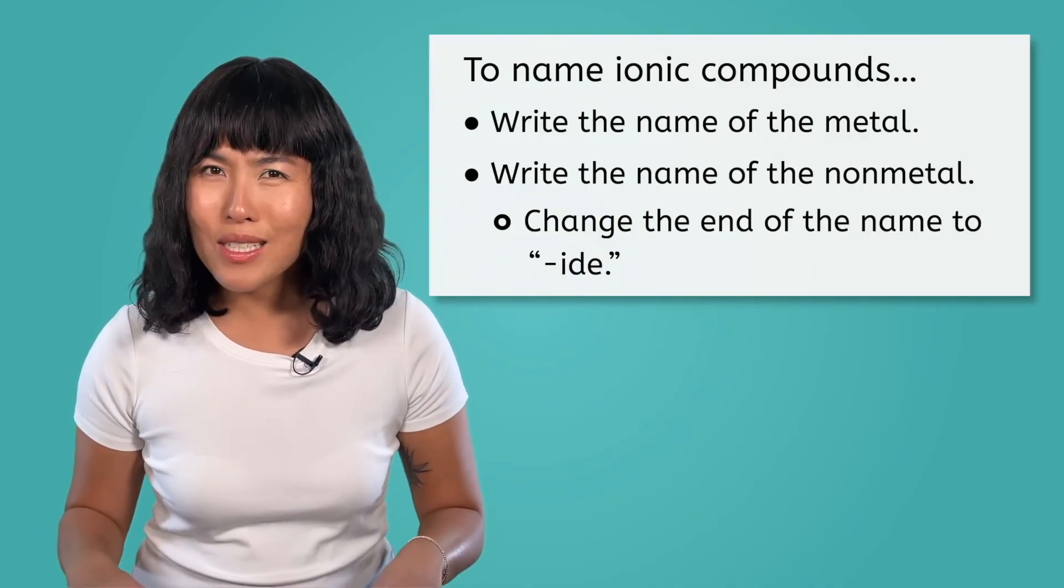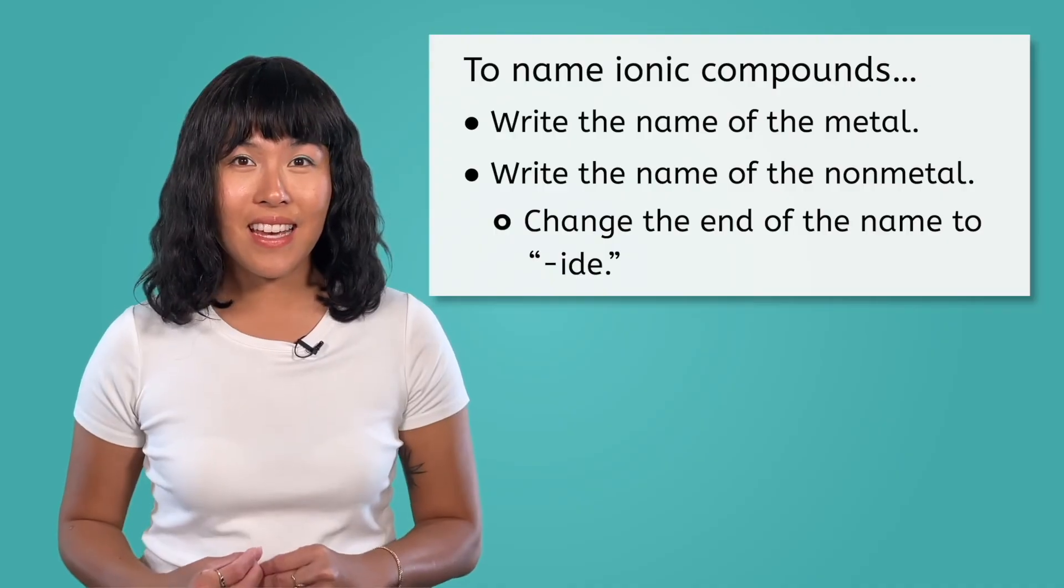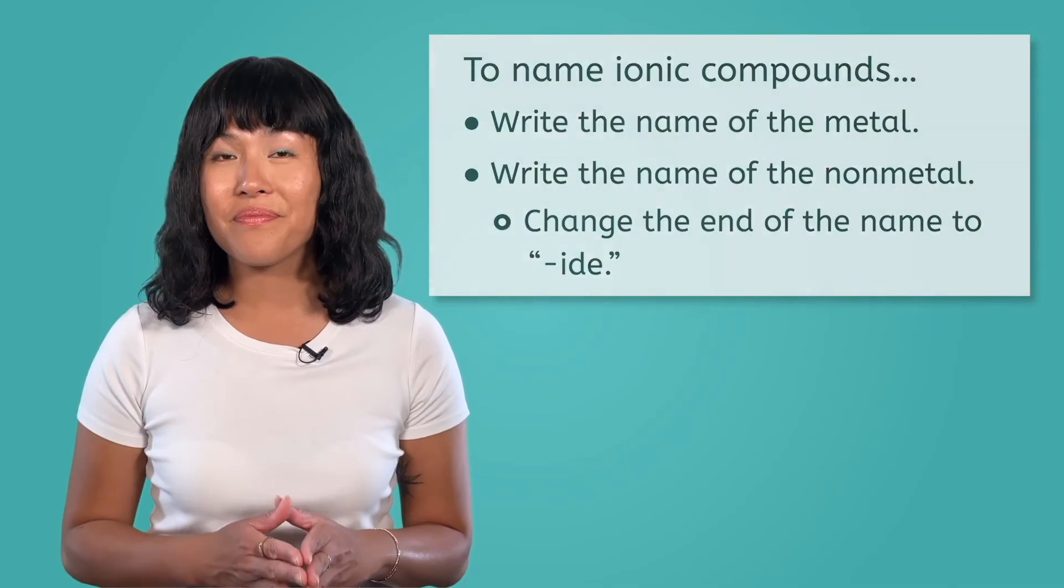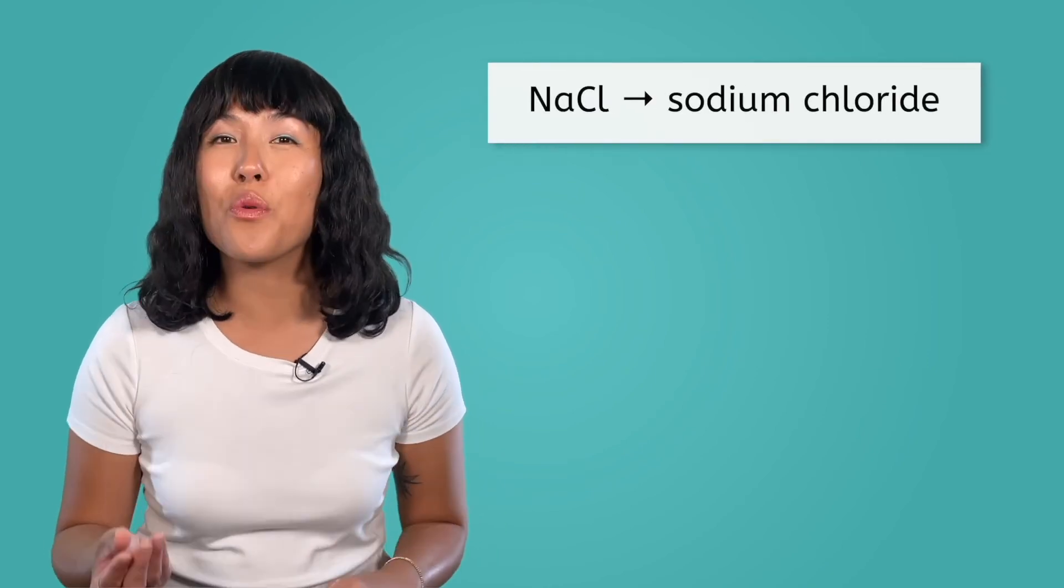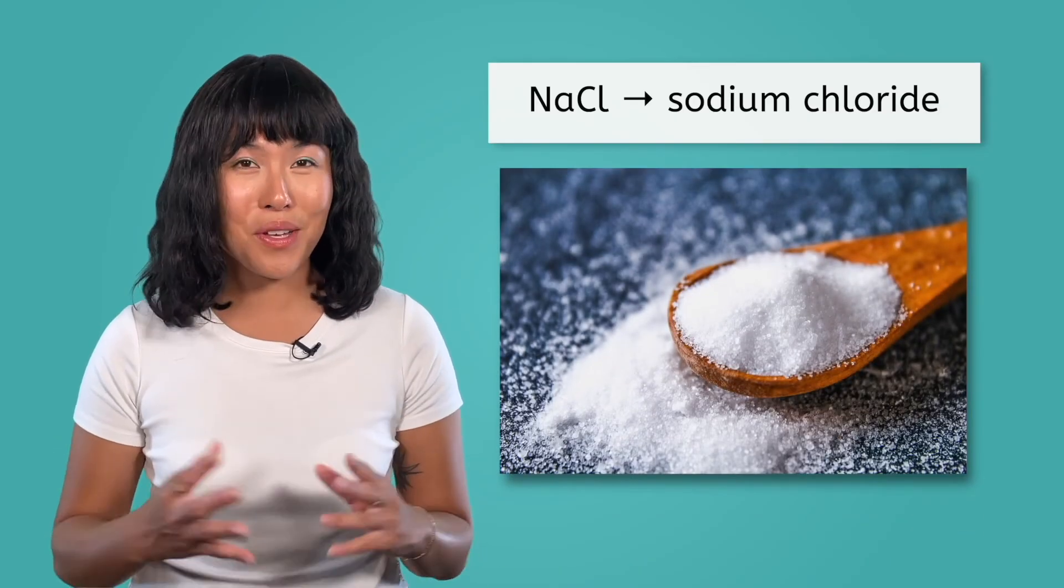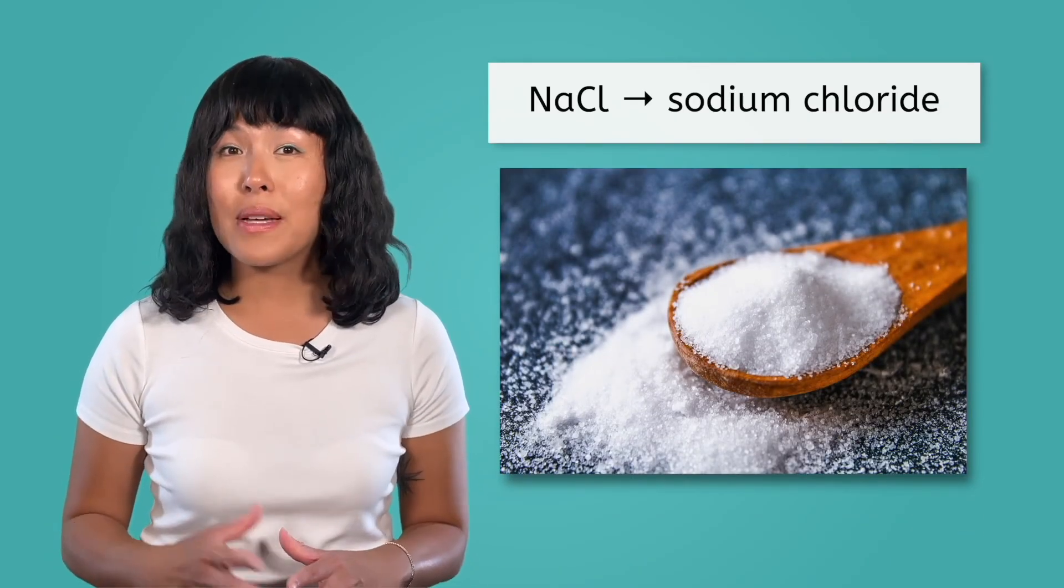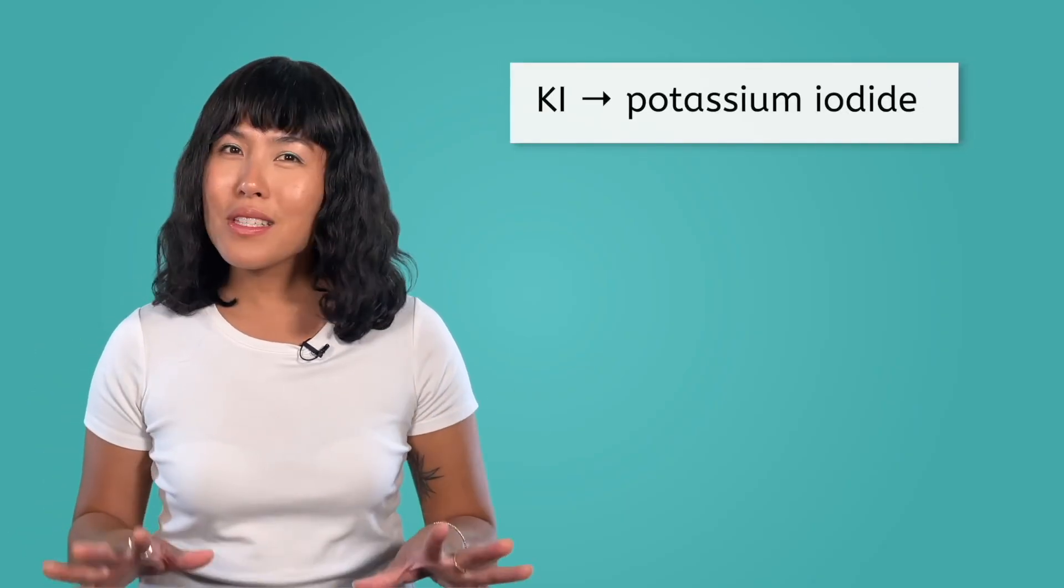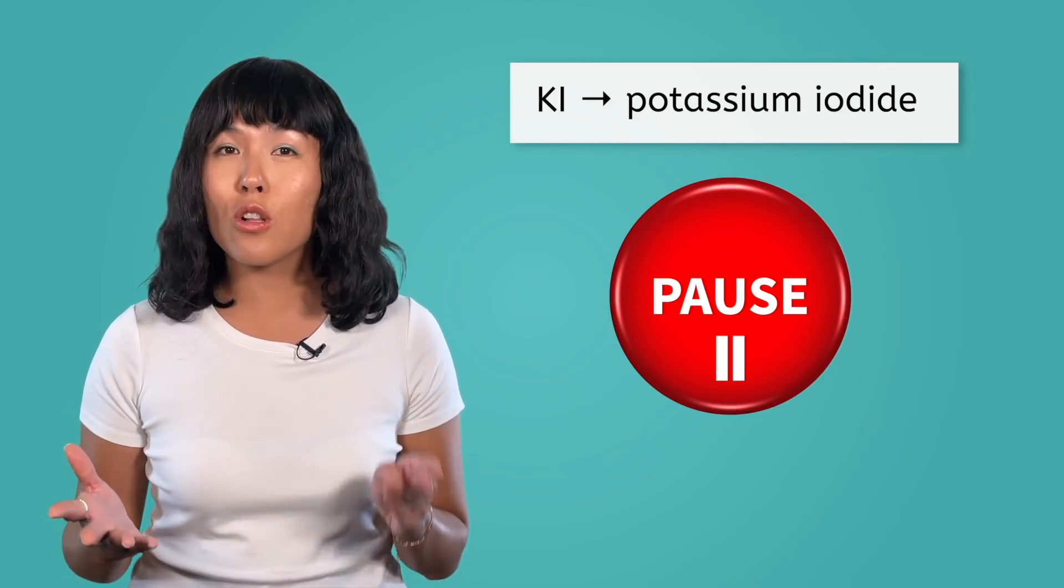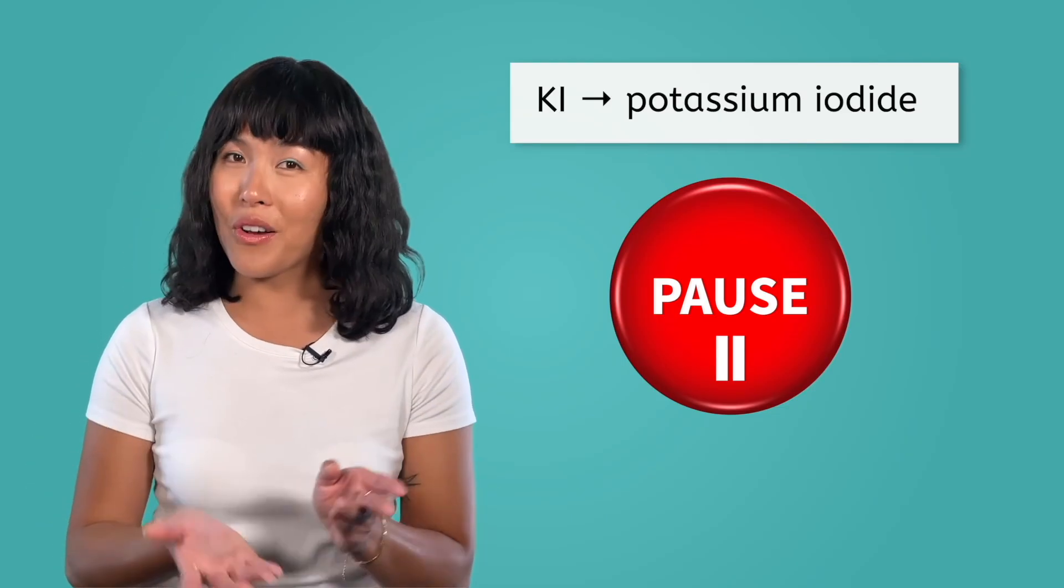Let's practice with the compounds we made earlier in this lesson. How would you name the compound formed between sodium and chlorine? Sodium stays sodium, but chlorine becomes chloride. So we get sodium chloride, which you may know as table salt. What about our second example, potassium and iodine? Potassium iodide. Pause the video and try the last two examples we did. Magnesium with chlorine and sodium with sulfur on your own.